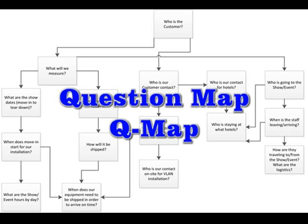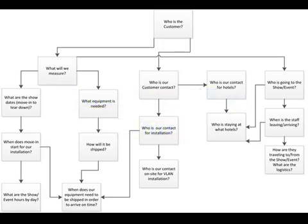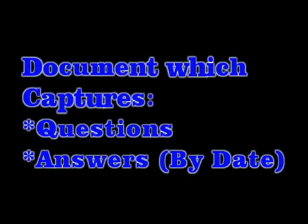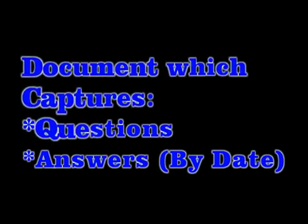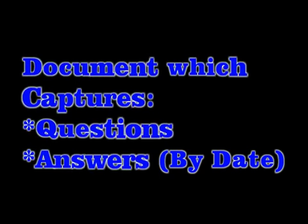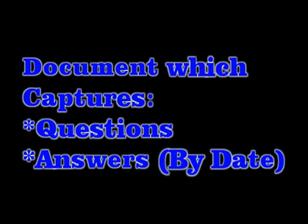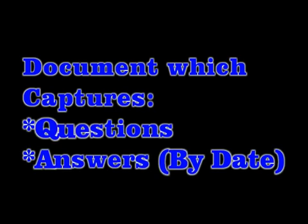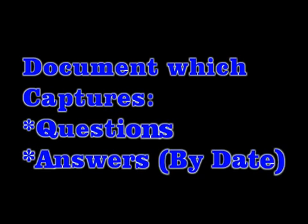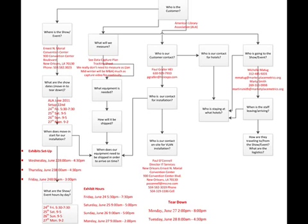This is best handled with a Q-map, or Question Map. Simply put, a Question Map is a document that captures all of the questions of a project along with the corresponding answers by date. It also lists the relationship these questions have to one another and consequently shows how each question links and flows together, which ultimately leads to a deeper or root question.